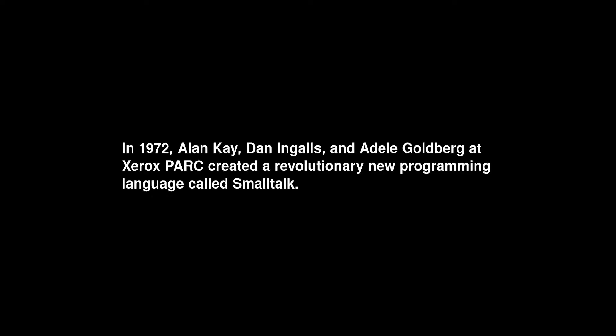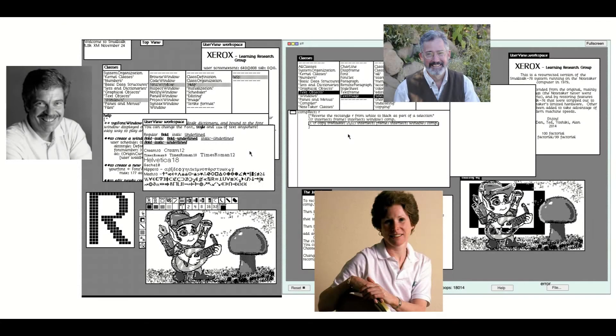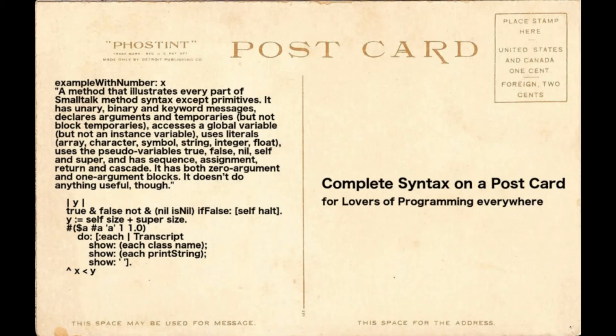In 1972, Alan Kay, Dan Ingalls, and Adele Goldberg at Xerox PARC created a revolutionary new programming language called Smalltalk. It was designed as a very simple, instructional language for teaching programming to young people, and as a purely object-oriented language based on the message-passing paradigm. How simple is Smalltalk? You can learn its complete syntax, which fits on a postcard, in less than 15 minutes. Try that with Python.